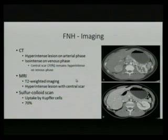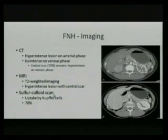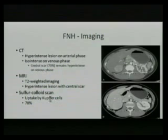On CT scan, FNH appears as a hyper-intense lesion on the arterial phase and iso-intense on the venous phase, with a central scar present in up to 70% of patients. The central scar remains hyper-intense even on the venous phase, and there may be an associated central artery. On MRI, it shows as a hyper-intense T2 lesion with a central scar. When it's hard to distinguish from hepatic adenoma on CT or MRI, a sulfur colloid scan can be obtained — FNH will light up because it contains Kupffer cells, while adenomas will not, and FNH is positive in 70% of cases.